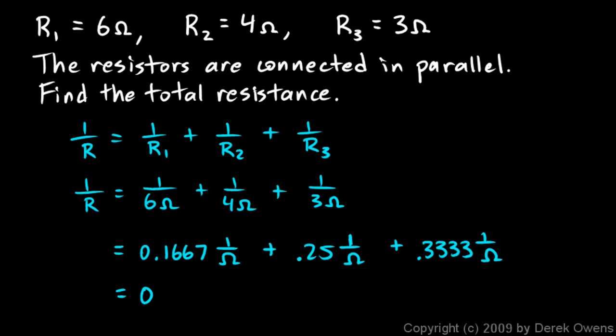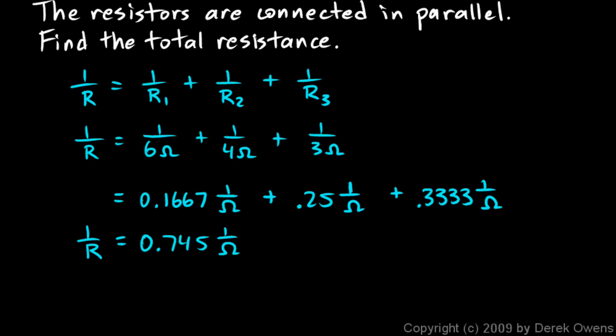Now what we just found here was 1/R. 1/R is 0.745, one over ohms. So R is going to be the reciprocal of this: 1 over 0.745, one over ohms. And when we take the reciprocal of 0.745, we get 1.33, and the reciprocal of one over ohms is just ohms. So 1.33 ohms—we get the same answer.